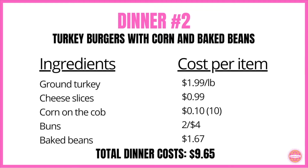Dinner number two is turkey burgers with corn and baked beans. They had the ground turkey on sale at $1.99 a pound, cheese slices for $0.99, corn on the cob at $0.10 each — grab 10 for an even dollar — buns on sale two for $4, and baked beans on sale for $1.67. Dinner number two comes out to a total of $9.65.